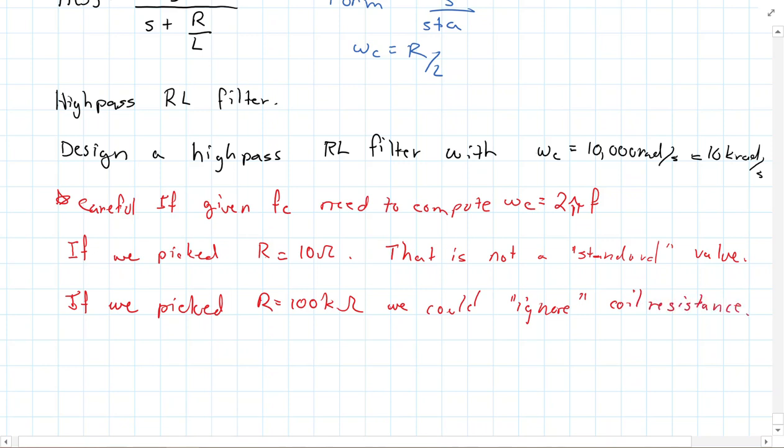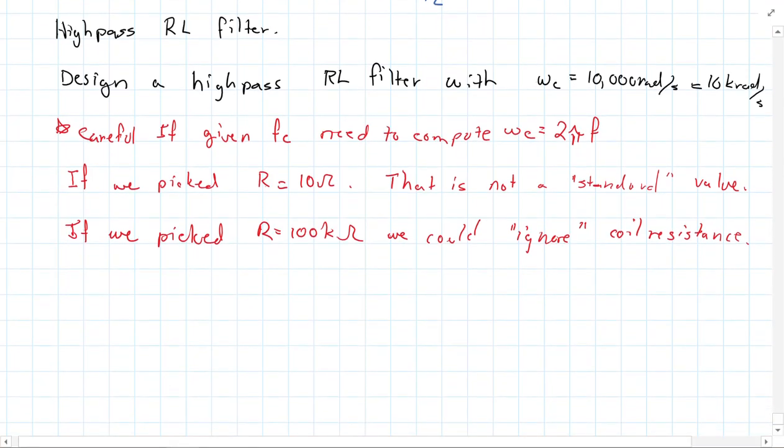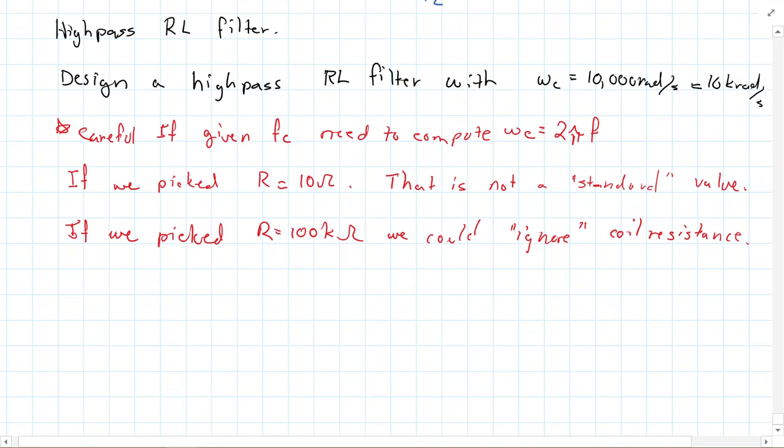But then we also have a problem with that. If I pick 100 kilo ohm, the size of inductor I might need might be unreasonably large. And this is where you have to do some playing around. Some of this is just going to take experience, but the general rule of thumb is we want to make sure these are somewhat reasonable values. Like capacitors, you don't really want something above microfarad range. You probably wouldn't want to go less than even picofarad.